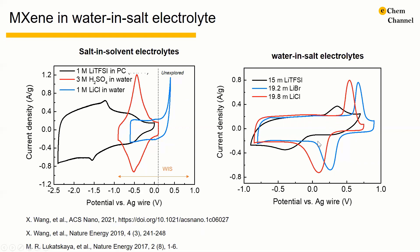A similar pair of peaks can be observed in three different kinds of water-in-salt electrolytes: lithium TFSI, lithium bromide, and lithium chloride. The separation in potential ΔEp between the anodic and cathodic peaks is all larger than 0.4 V at a scan rate of 2 mV per second. Based on our experience with such a large ΔEp in CV, our first assumption is that it is a diffusion-controlled process with distinct ionic charge transfer, or battery-like behavior. But is it really the case?